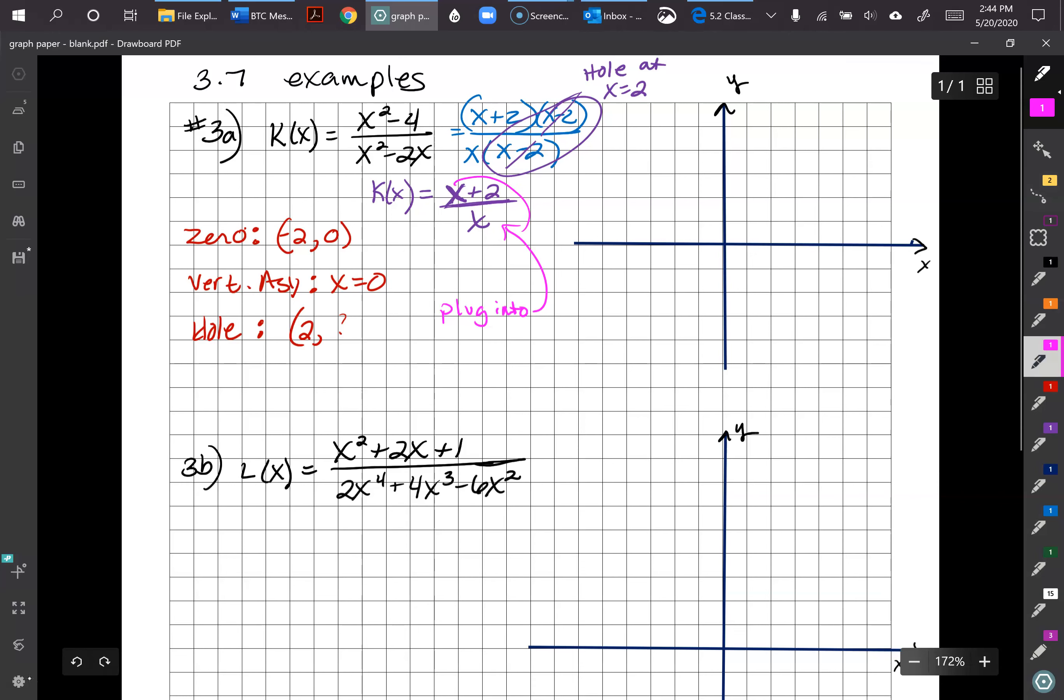Here and here. So we're going to get 2 plus 2 over 2. 4 over 2, which is 2. So that's kind of nice. So that's going to be our hole. And we'll put an open circle there.